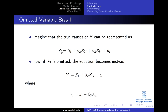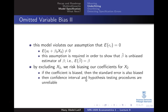The true model is: y depends on x2 and x3, plus some error term u. But let's say for some reason you have omitted x3, and rather than estimating the true model you estimated the model where y depends only on x2. In that case, the influence of x3 on y will be included in the error term, and we will have a new error term epsilon_i, where epsilon_i equals u_i plus beta_3 times x3.